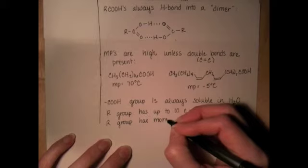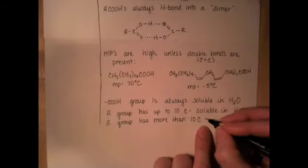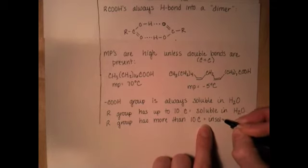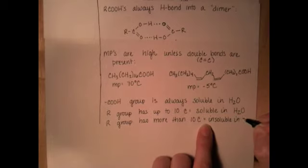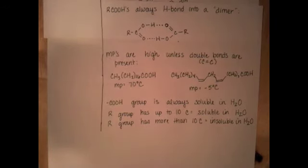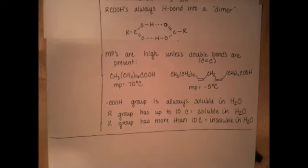If the R group has more than 10 carbons, then that's going to be too greasy, and even though the carboxyl group is very polar, the molecule itself is going to be insoluble. And if it has exactly 10 carbons, then I guess the whole entire world is going to end - who knows what it's going to do. This is just a general rule of thumb, don't put any money on this. This is the end of section 23, so write some study questions for it. And next we'll talk about the acidity of carboxylic acids.